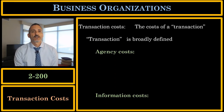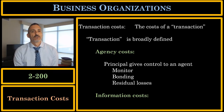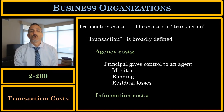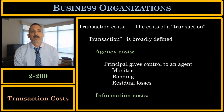In our course, we're going to focus mainly on agency costs and information costs. Agency costs arise when we have an agency problem, where a principal gives authority or discretion to an agent to run a transaction or to operate a business on behalf of the principal. The principal is worried that the agent will not do her job carefully and honestly — that she will steal from the principal, that she will benefit herself at the expense of the principal. The transaction costs in this relationship include monitoring costs, bonding costs, and the costs of residual losses. We'll explore these in greater detail in the next slide.